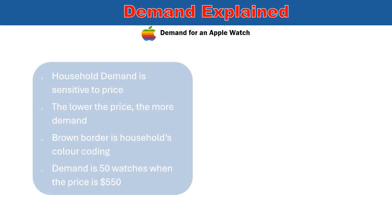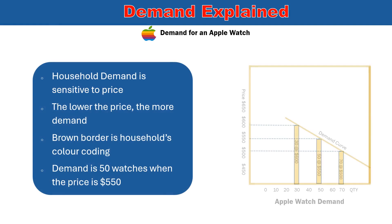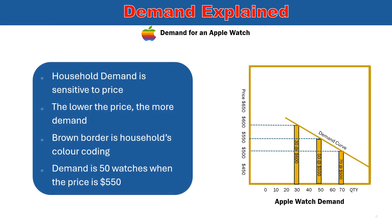The demand curve shows the relationship between price and the quantity demanded. It slopes downward, meaning as the price falls, consumers buy more. The interaction of supply and demand acts as a signaling and coordinating mechanism in a market economy, so that prices adjust to reflect the relative scarcity or abundance of goods.